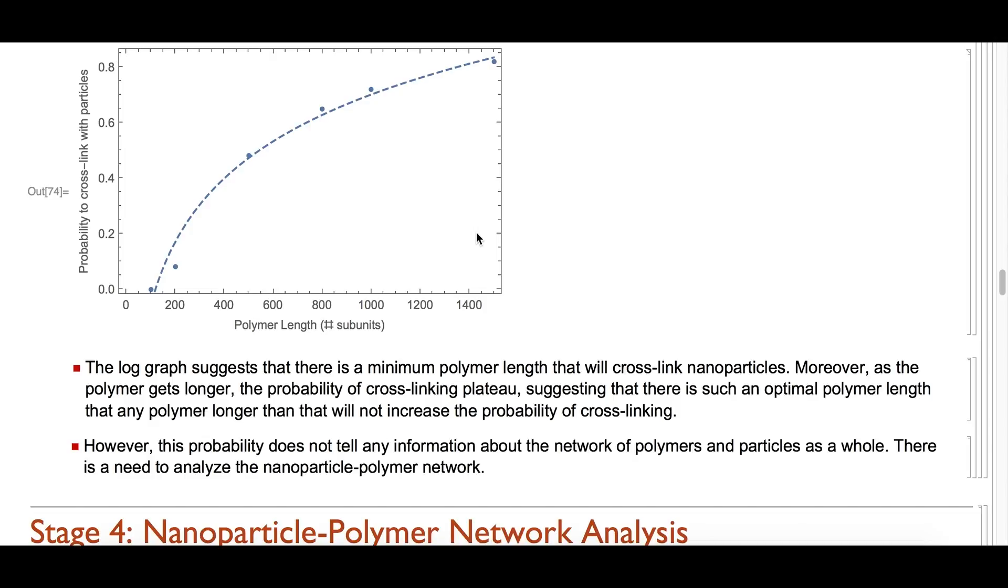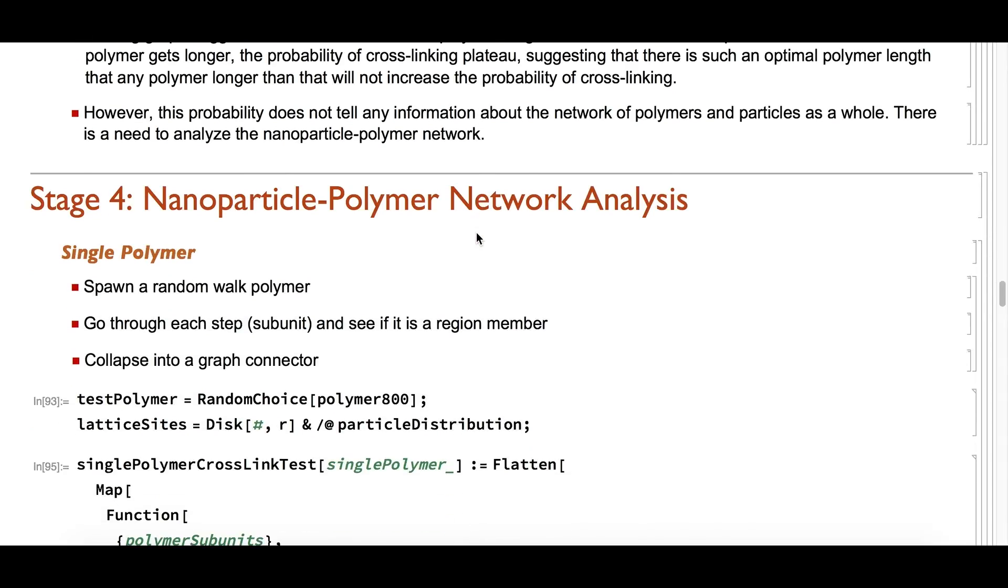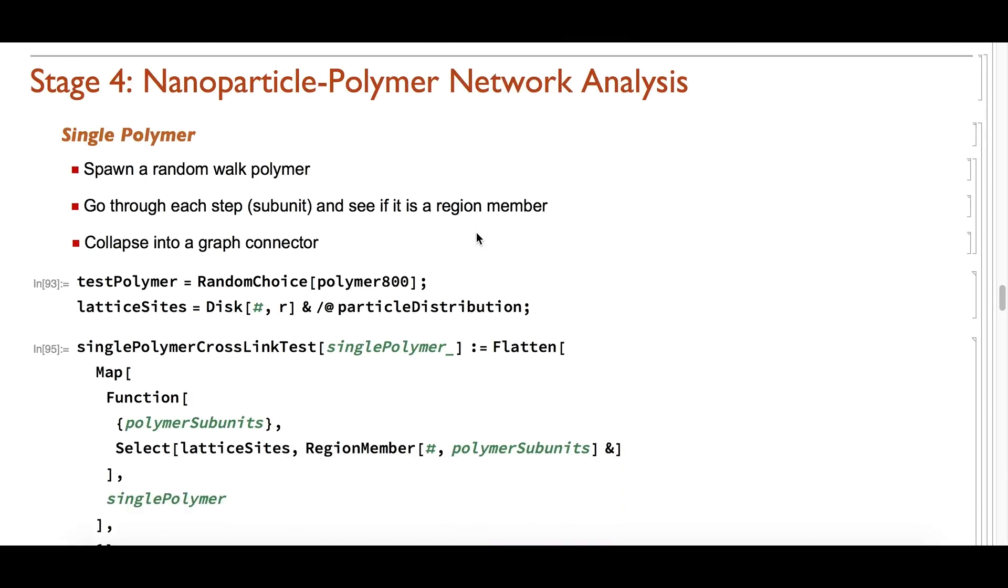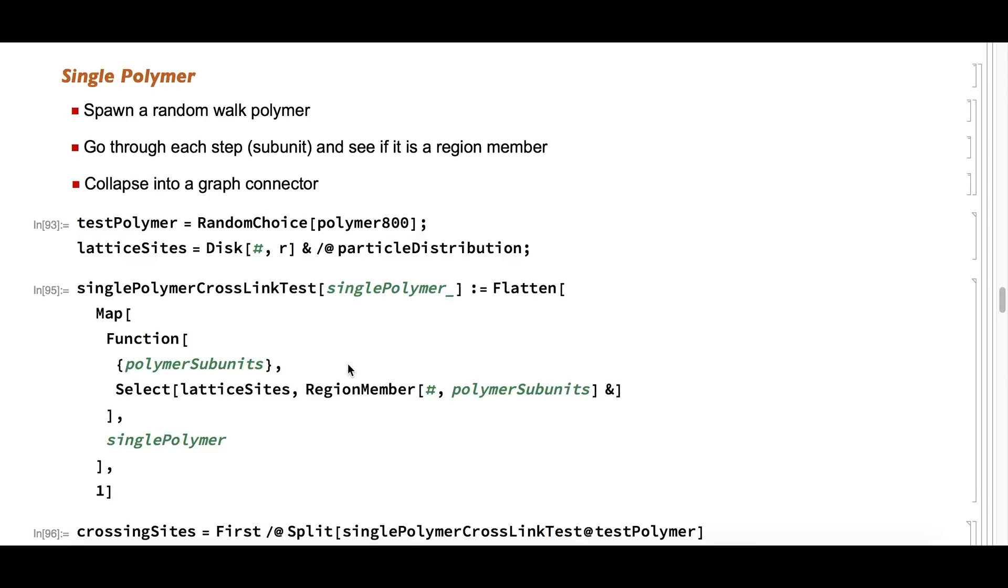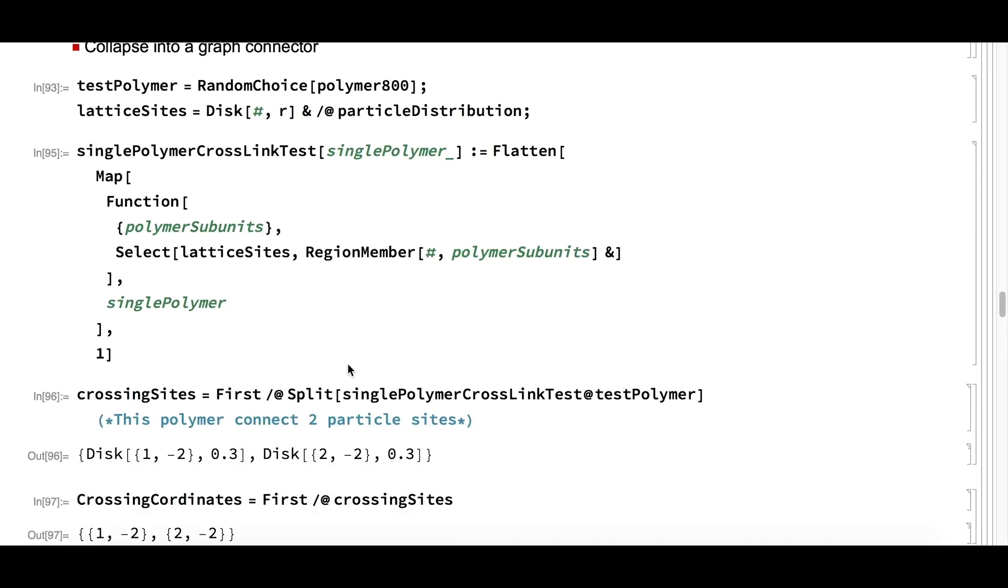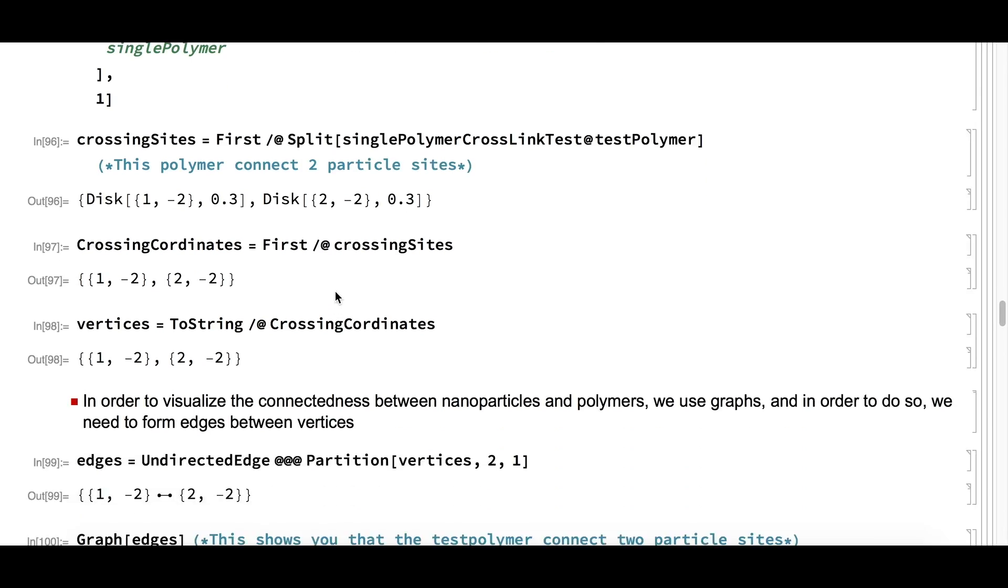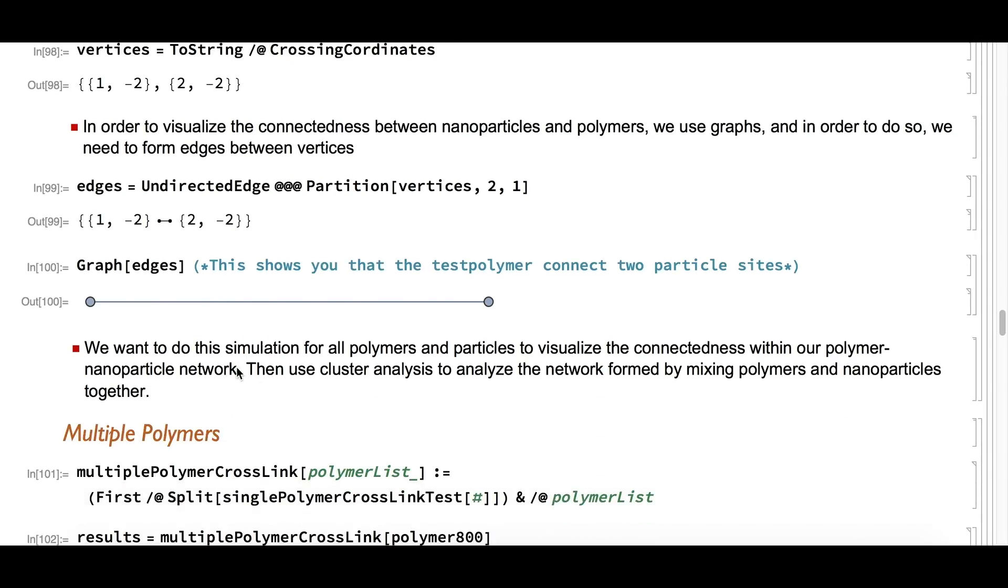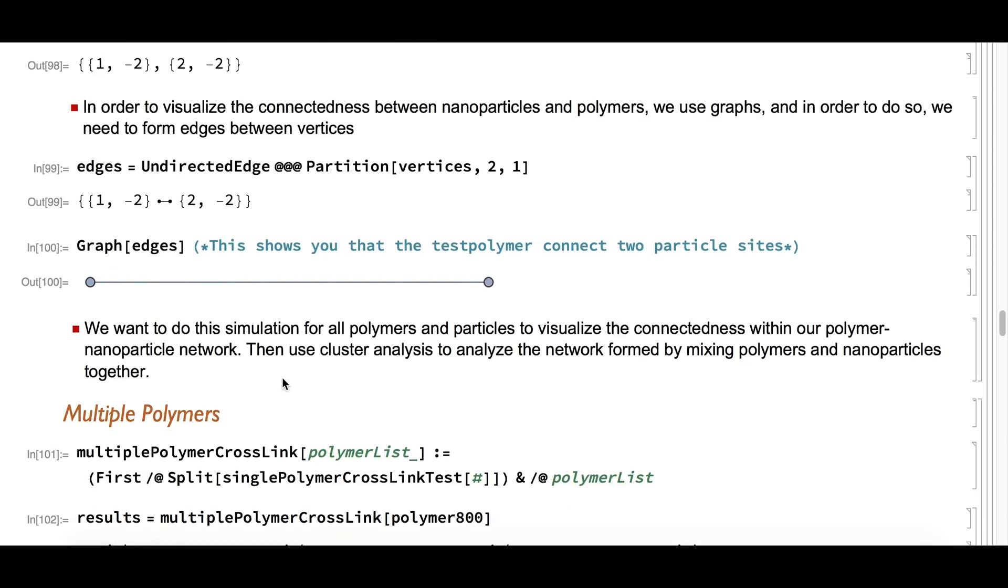Although the analysis of probability for polymers to cross-link is useful, it does not tell any information about the network of polymers and particles as a whole. So in stage 4, I will use cluster analysis to analyze network formation given polymer length and particle distribution. The function SinglePolymerCrossLinkTest returns all the particle lattice sites which the input polymer can connect. Then we use the built-in functions UndirectedEdge and Graph to visualize this connection. We want to do the simulation for all polymers and particles to visualize the connectedness within our polymer-nanoparticle network, then use cluster analysis to analyze the network formed by mixing polymers and nanoparticles together.